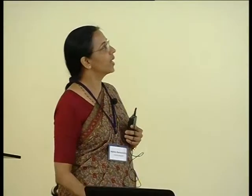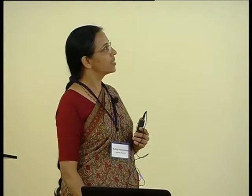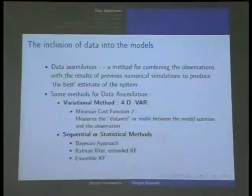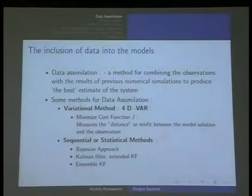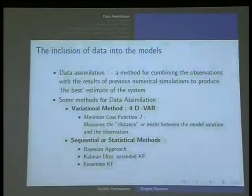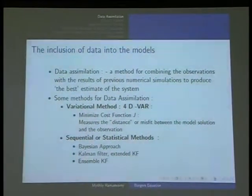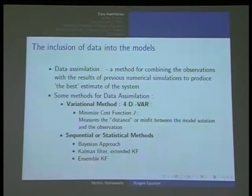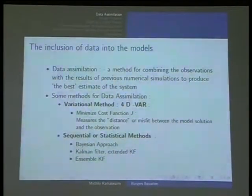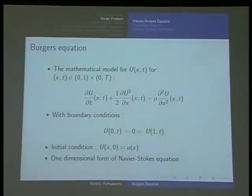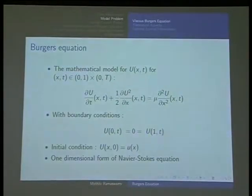Data assimilation is a method for combining the observations with the results of previous numerical simulations to produce the best estimate possible for the system. Some methods for data assimilation include variational method 4D-Var, and we were thinking of doing Bayesian, ensemble Kalman filter, and back and forth nudging, but we have not gone that far.